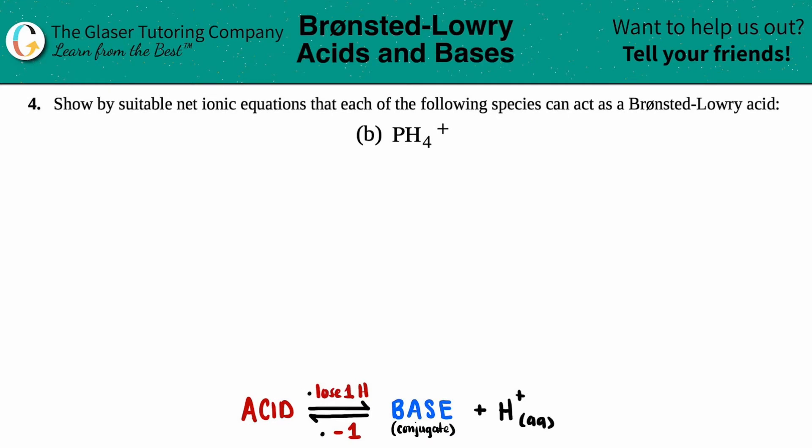Number four, show by suitable net ionic equations that each of the following species can act as a Bronsted-Lowry acid, and then we have letter B. So in this case, we just have to show via a net ionic equation how PH4+ acts as a Bronsted-Lowry acid.